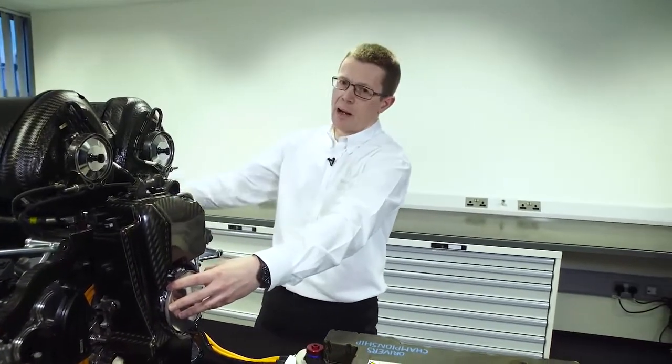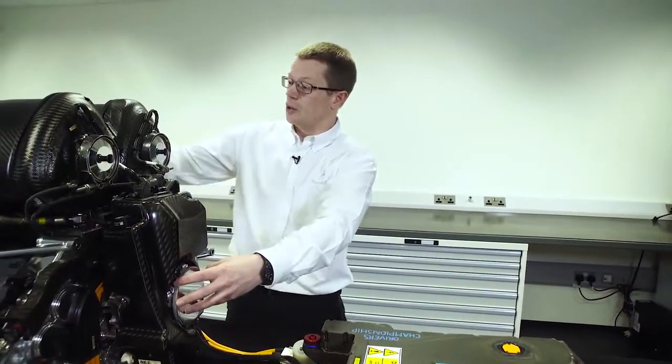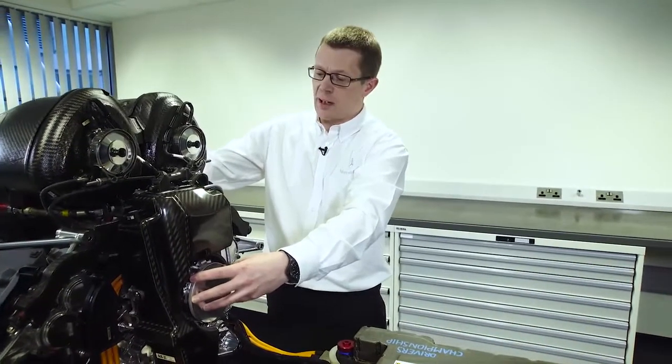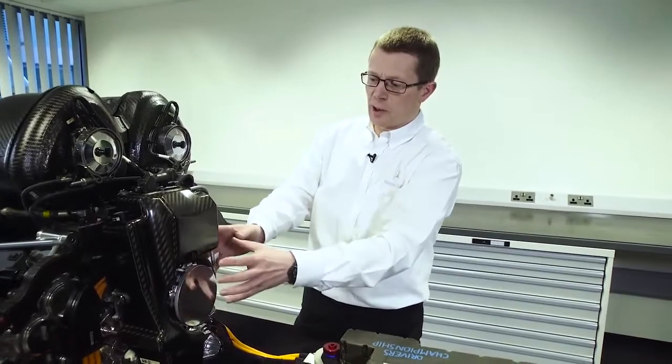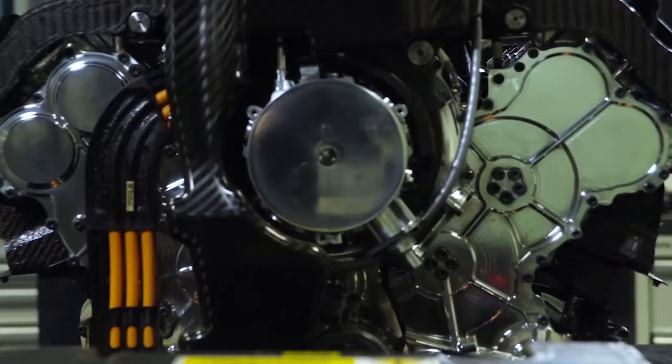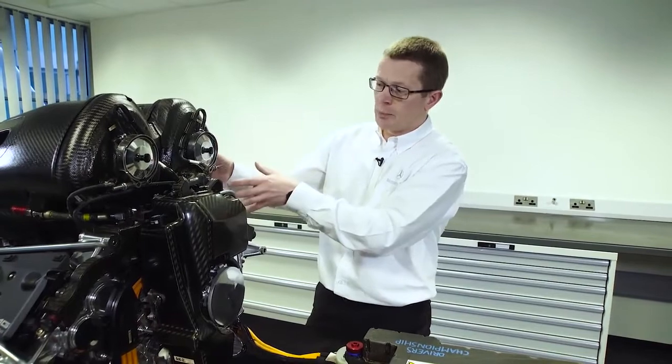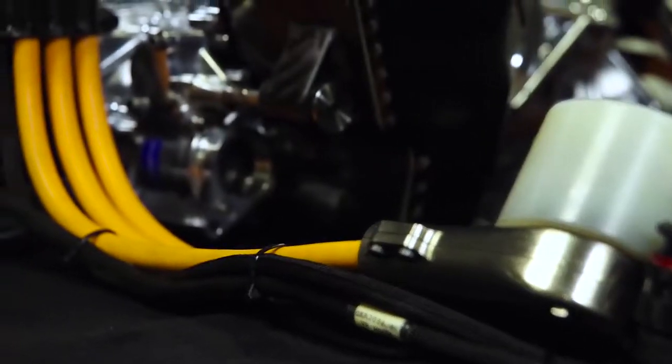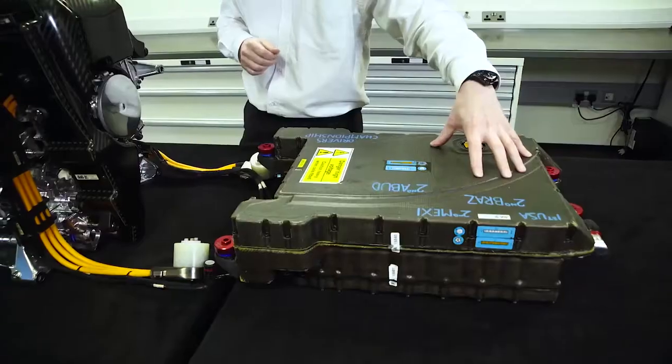The exhaust gases that have come out from the combustion process drive the turbine. We recover the energy from those exhaust gases and first it drives the compressor to put the air into the engine. Then any excess energy is absorbed by the electric machine, comes down the cable, through the power electronics and can be stored in the battery.